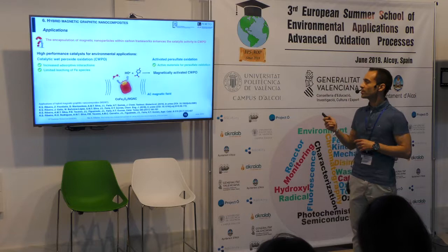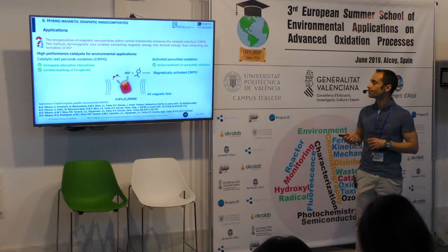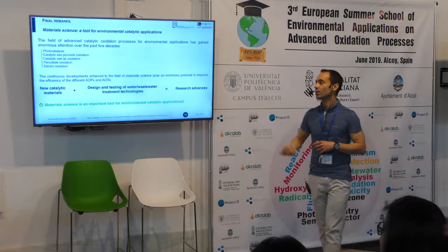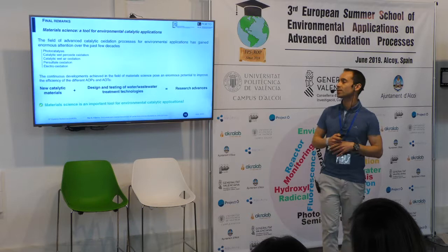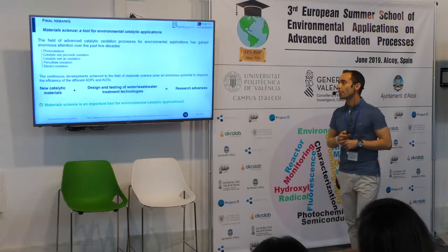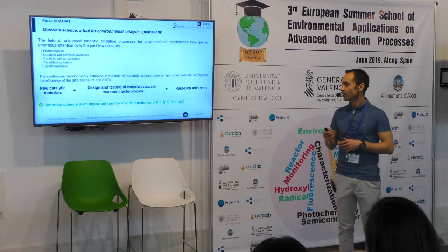This process was coined as magnetically activated catalytic peroxide oxidation. As final remarks, several research advances have been reached as a consequence of the development of new catalysts, and that is the reason why material science is an important tool for environmental catalytic applications, such as photocatalysis, catalytic wet peroxide oxidation, catalytic wet oxidation, persulfate oxidation, or even electro-oxidation, among others.